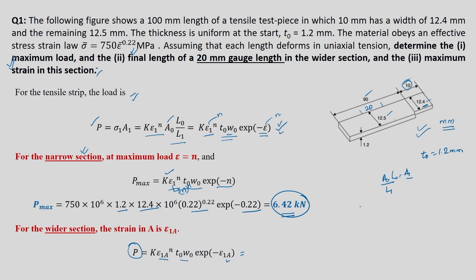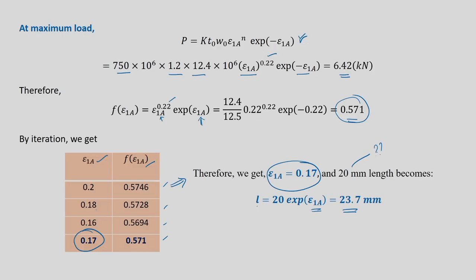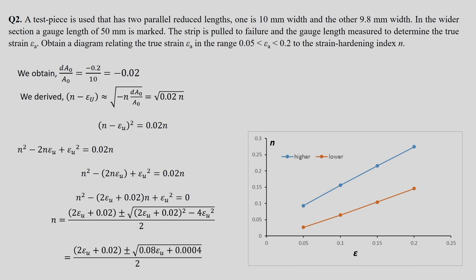It is a simple problem with two important points: for the narrow section, put the maximum load condition epsilon equals n to get P_max. Then equate that maximum load to the same situation in the wider (A) region, and from that get the strain and the corresponding new gauge length.